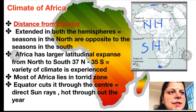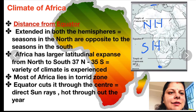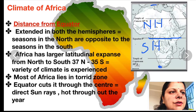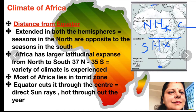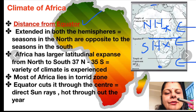Most of Africa is located in the torrid zone — that means between the tropics. The equator cuts through the center of Africa, so the regions in both the northern and southern hemispheres near the equator receive direct sun rays. The torrid zone remains hot throughout the year. As we move away from the equator, the temperature gets lower.